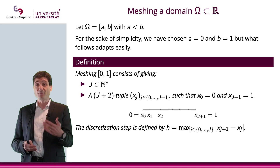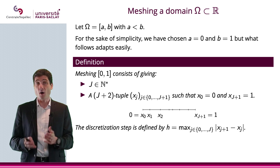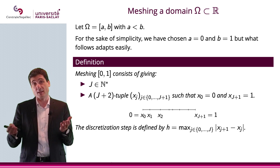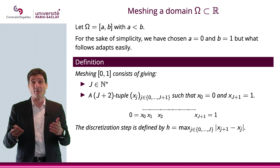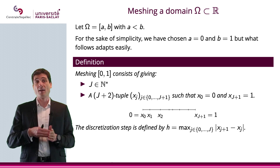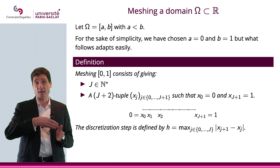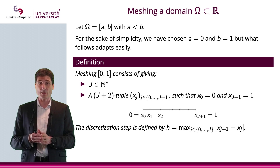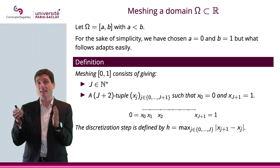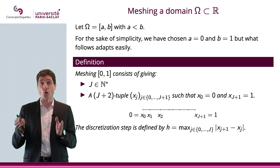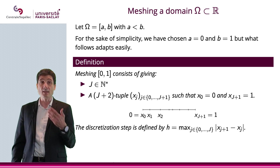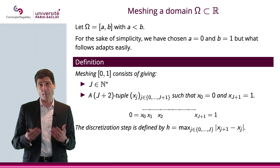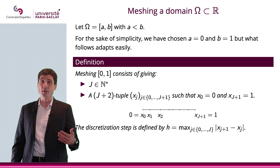The step of the discretization is defined as the maximum of |x_{j+1} − x_j|. If the tuple is ordered, it is simply the maximum distance between two consecutive nodes. So this definition of a mesh is basically a subdivision, which you've probably encountered before.